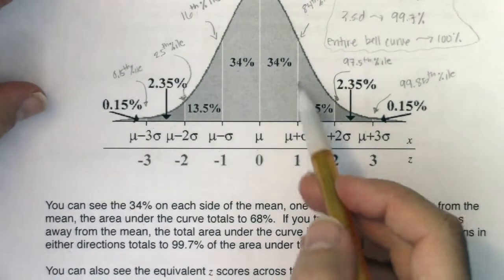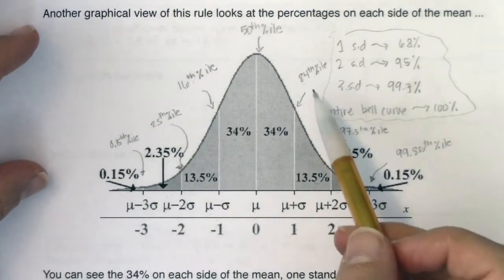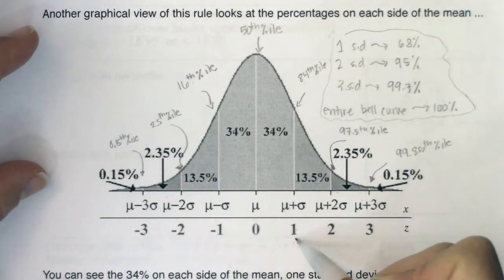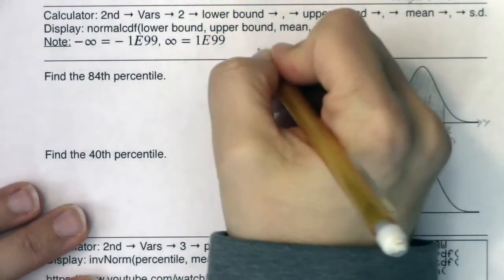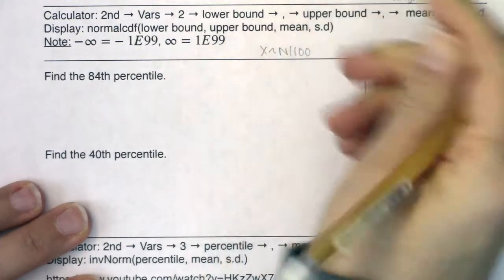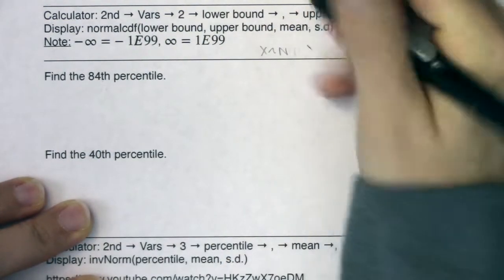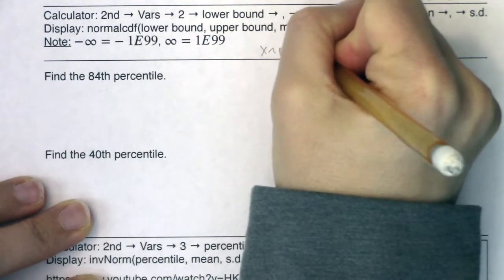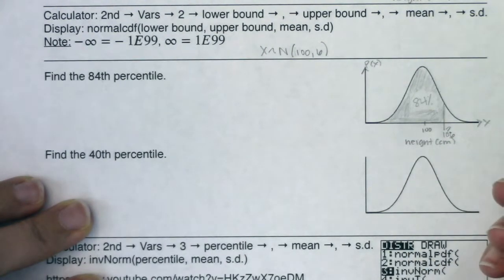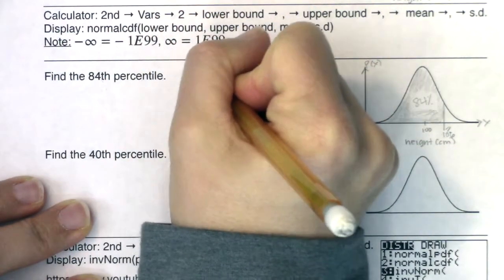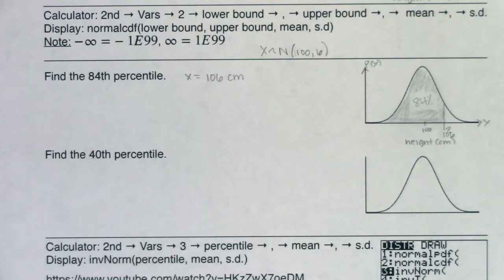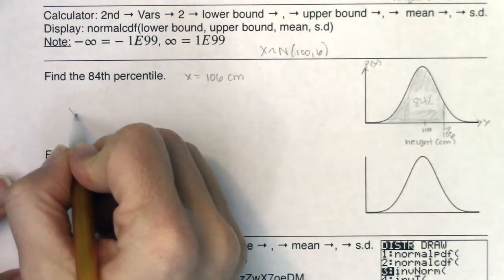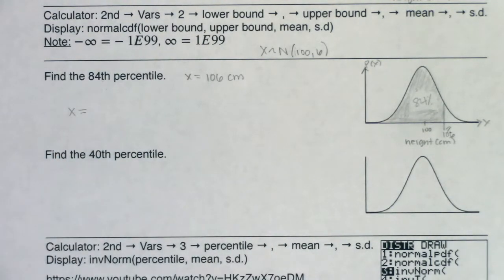Percentiles are cumulative relative frequencies. What height puts a child at the 84th percentile? It has to be above 100. Using the empirical rule: a z-score of +1 gives you the 84th percentile, and one deviation above the mean is 100 + 6 = 106 centimeters. So the 84th percentile is approximately 106 cm. But I want to show you how to do this on the calculator, especially when the percentile doesn't fall on an empirical rule value.